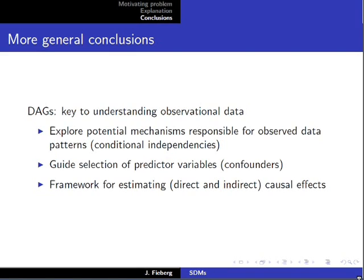More generally, directed acyclical graphs are the key to understanding observational data. We use them to explore potential mechanisms responsible for the observed data patterns in our Black Bear example. They're also useful for guiding selection of predictor variables and regression analyses. And more importantly, they provide a framework for estimating direct and indirect causal effects from observational data.